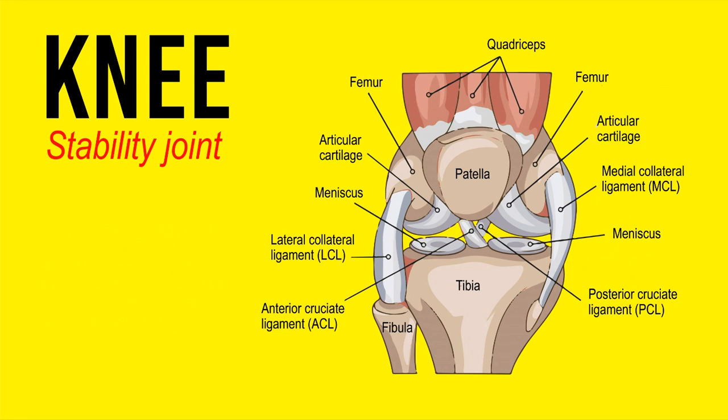Next up we have the knee, which is generally regarded as a stability joint. Although it can move in very limited planes of motion, those small ligaments do not facilitate handling big amounts of weight. Having 200 kilograms on your back and trying to move with your knees only is not the job of the knee — that is the job of the ankles and the hips. The main purpose of the knee is stability.